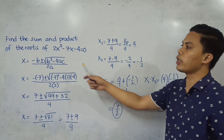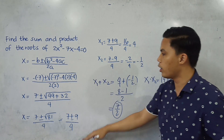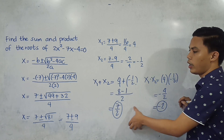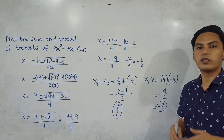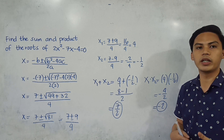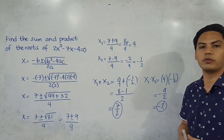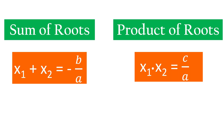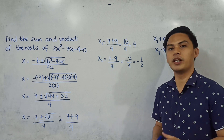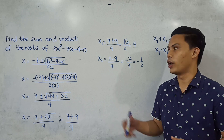Just imagine if the question is asking for the roots — we would need to go through the quadratic formula, determine the roots, and then add and multiply them. It would be a very long process. So this time, we're going to use a shortcut. The formula for the sum of the roots is: x sub 1 plus x sub 2 equals negative B over A. And for the product of the roots: x sub 1 times x sub 2 equals C over A.